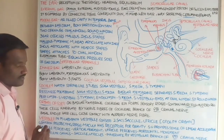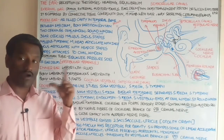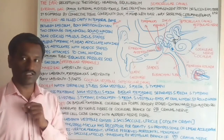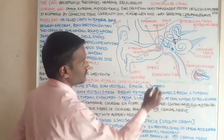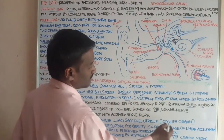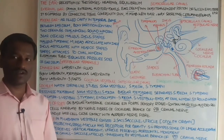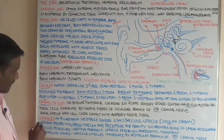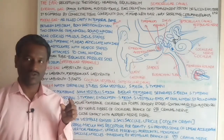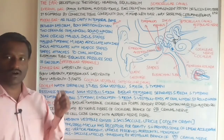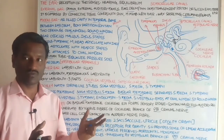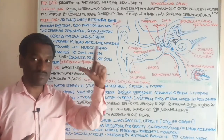In the membranous labyrinth, the vestibule consists of two sac-like arrangements called the saccule and utricle. The utricle is collectively also called the otolith organ. It contains a ridge-like arrangement called the macula, which has receptors for gravity. The saccule and utricle provide a sense of linear acceleration, while angular acceleration is controlled by the semicircular canals.